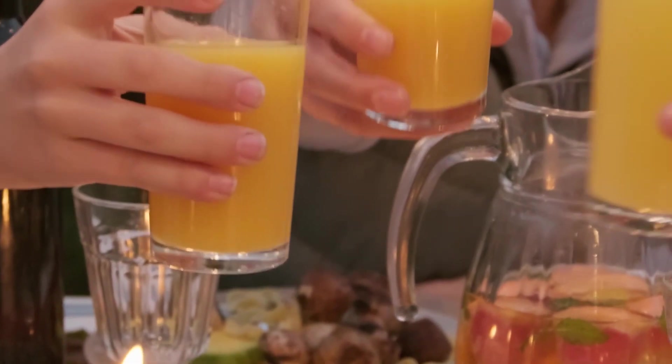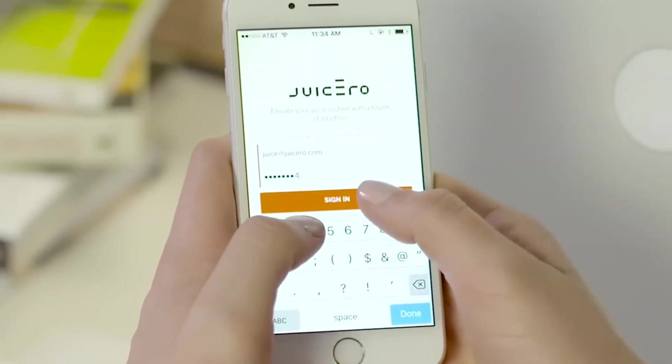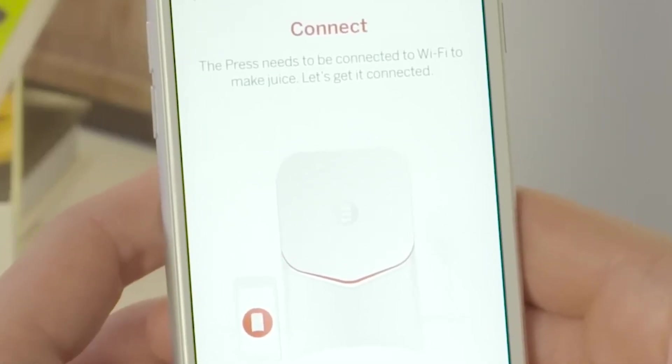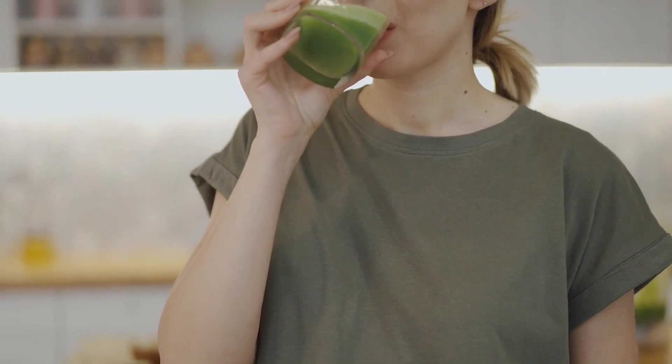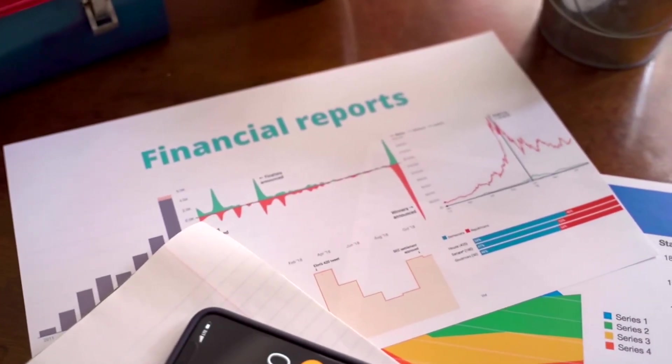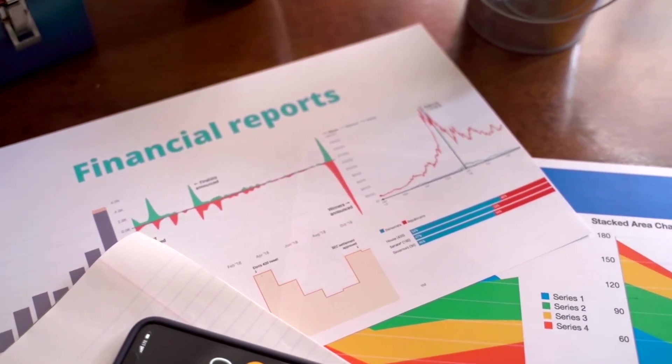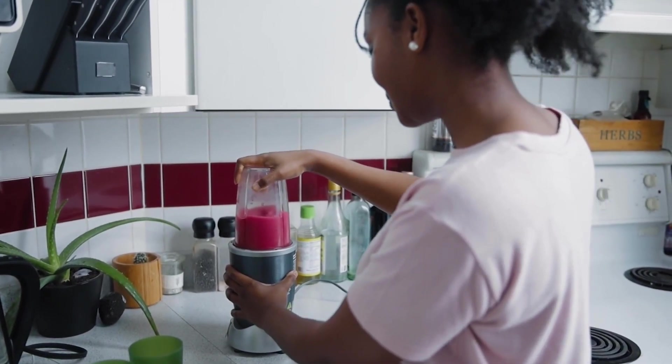This attention to detail meant that customers could always enjoy the freshest juice possible. To make the experience even more personalized, Juicero developed a user-friendly app. Users could customize their juice drinking schedule and have their juice packages delivered accordingly. The app also provided detailed nutritional information about the juice, empowering users to make informed choices about their consumption.